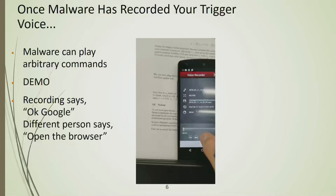In the security model for AI assistants, there are two major things they believe help secure your system. One is that they have your 'OK Google' or Alexa voice printed — though Alexa may not be voice printed.